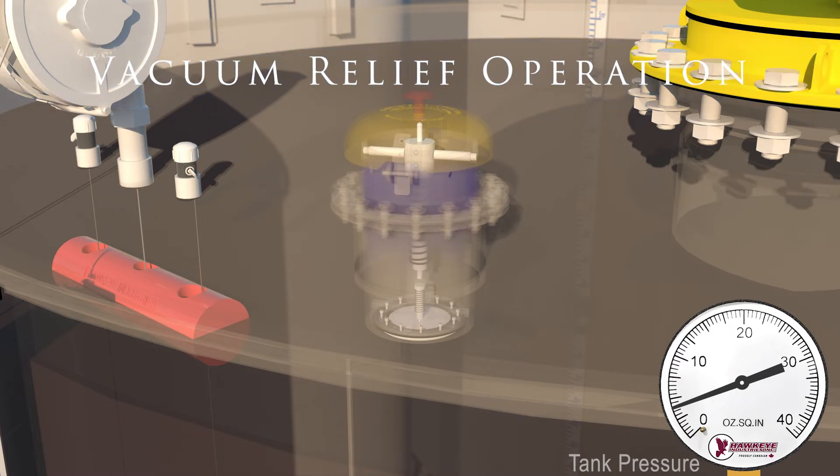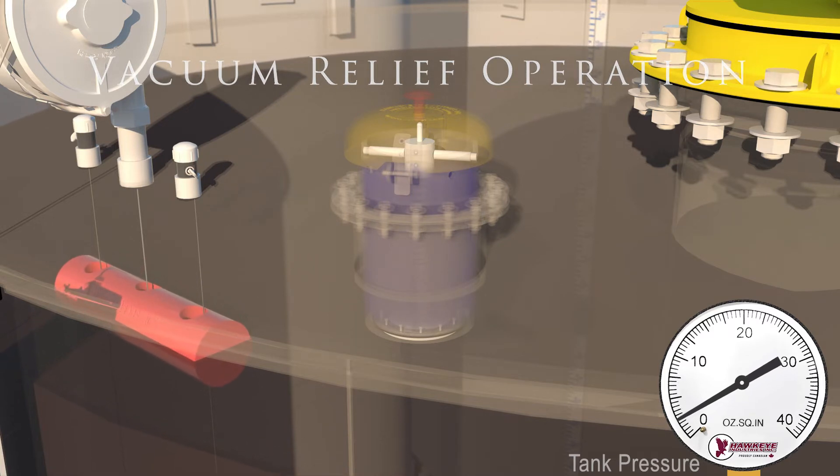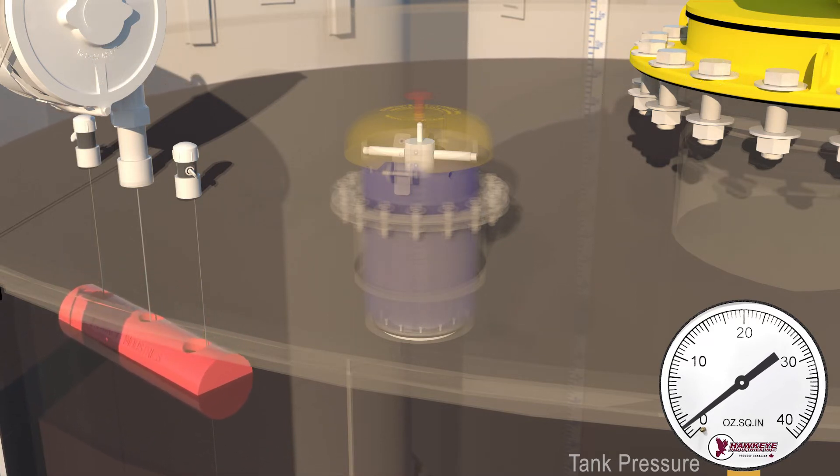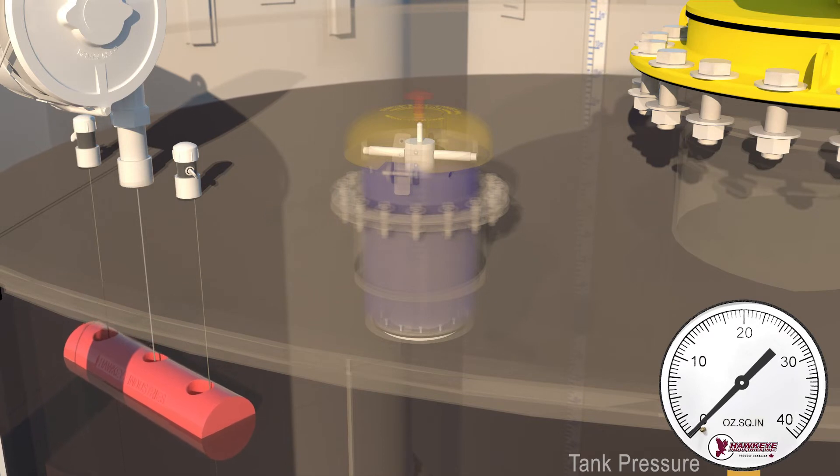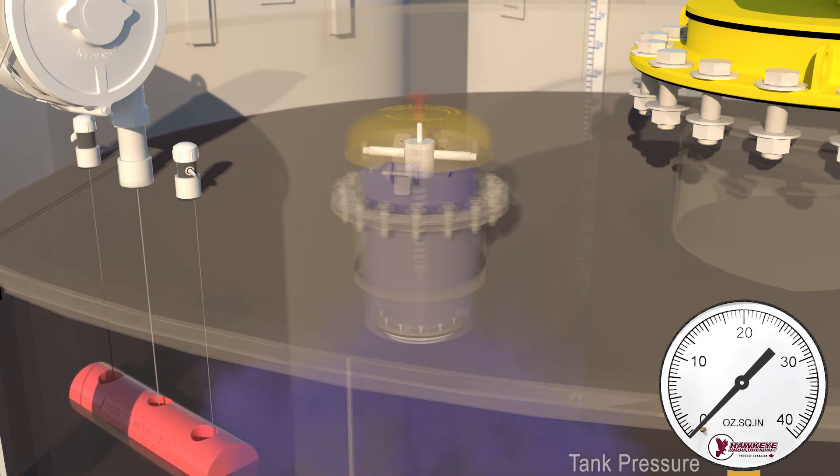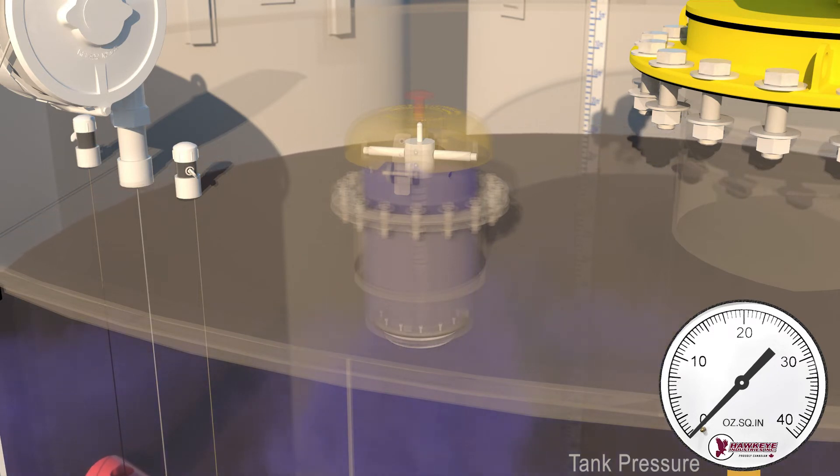As the fluid leaves the tank, the internal pressure decreases below atmospheric, leaving the tank at risk of collapse. When the tank pressure drops below atmospheric pressure by 0.4 ounces per square inch, the vacuum pallet opens and allows atmospheric air to enter the tank.